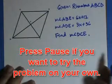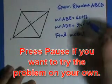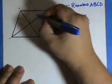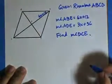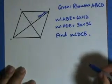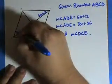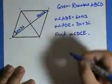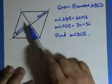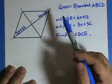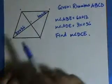All right, let's fill in the information. Measure of angle ABE is 6x plus 12. Measure of angle ADE, where's ADE? It's over here, is 3x plus 36.